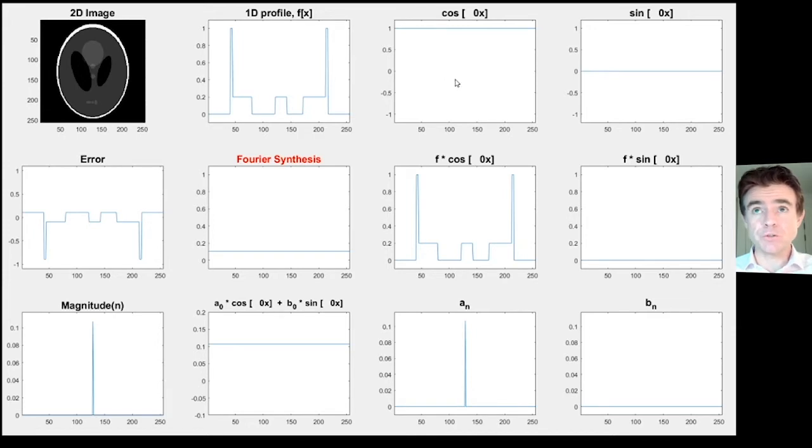To find the coefficient a₀, we multiply the profile by cos zero, by that constant function equal to one everywhere. When we multiply the function f of x by cosine, we get this result here. Because the cosine is just a value of one everywhere for zero frequency, we get exactly the same result as the original function. That's the first stage. The next stage is to take the integral to sum up all the values as we scan across all the x positions. Once we've done that definite integral, we divide by the range of integration.